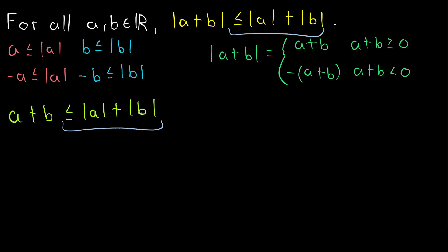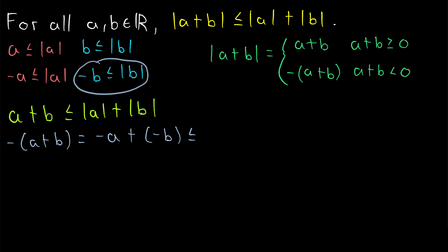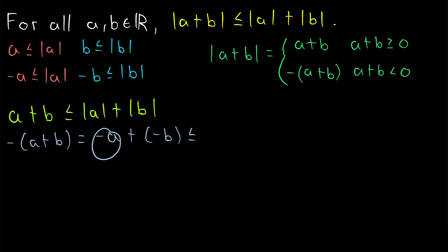That's the inequality we were looking for, so we can move on to negative a plus b. What do we know about negative a plus b? Well, distributing the negative, it's equal to negative a plus negative b. And we just went over how negative a is less than or equal to the absolute value of a, and similarly for negative b. So if we replace them both by greater numbers, then we get a greater number. So negative a plus negative b is less than or equal to the absolute value of a plus the absolute value of b.